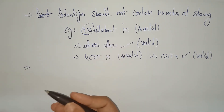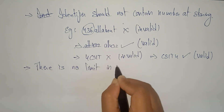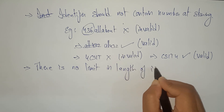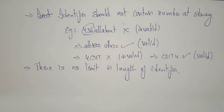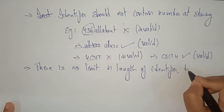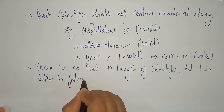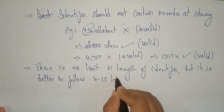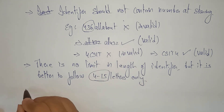There is no limit on the length of an identifier. However, even though there is no limit, it is better to use only 4 to 15 letters in an identifier to make it easier to manage.